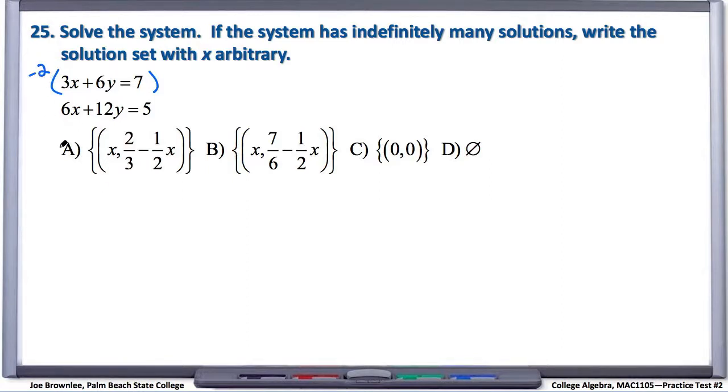So I'll go ahead and rewrite the system down here. Negative 2 times 3x is negative 6x. Negative 2 times positive 6y is minus 12y. And negative 2 times positive 7 is negative 14. And we didn't do anything to the second equation, so we can go ahead and just write that underneath.